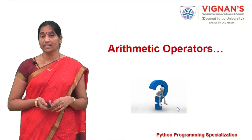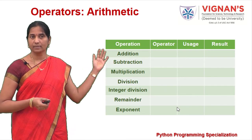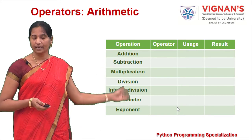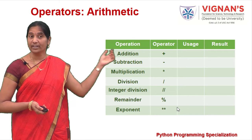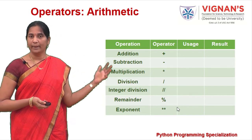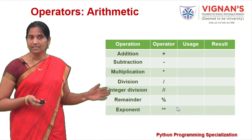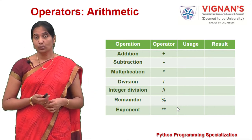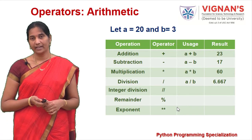Python supports various arithmetic operators: addition, subtraction, multiplication, division, integer division, remainder, and exponent. The symbols used are: plus for addition, minus for subtraction, asterisk for multiplication, slash for division, double slash for integer division, percent for remainder, and two asterisks for exponentiation.